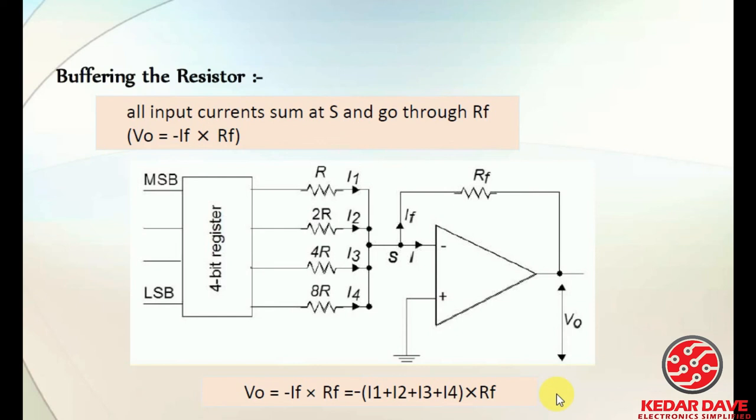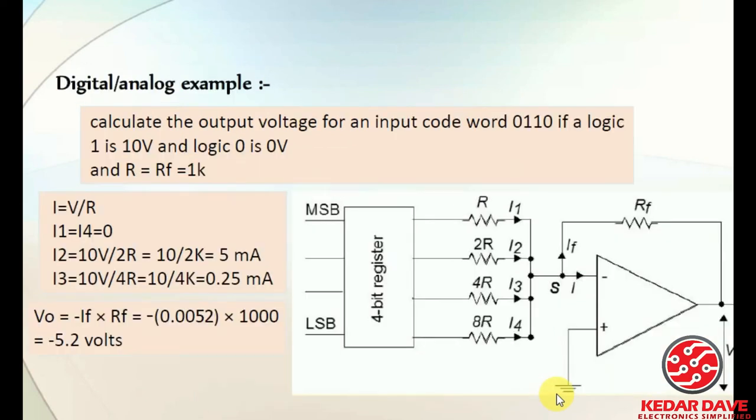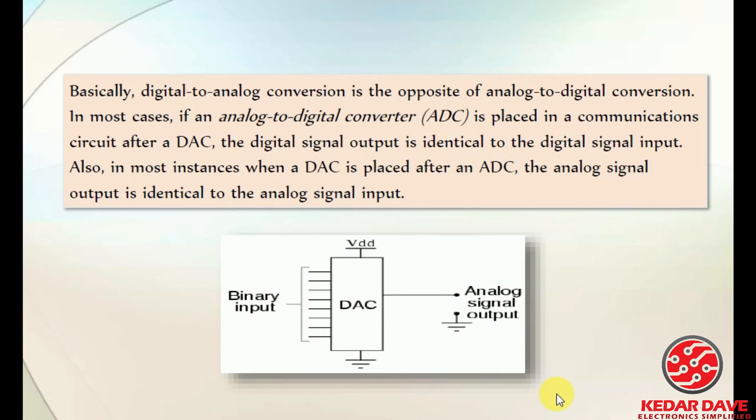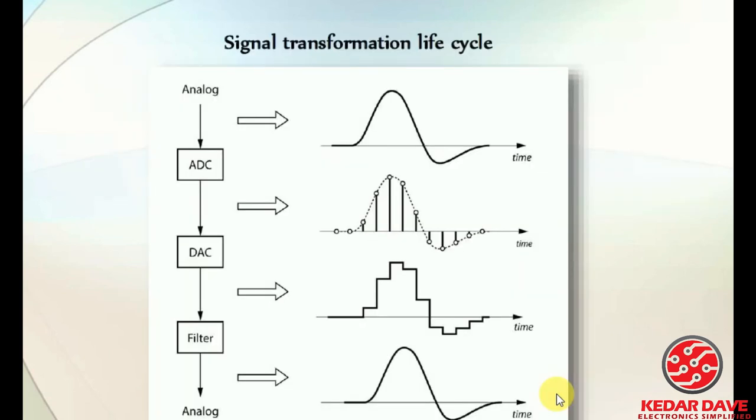Using the values of i1, i2, i3, i4 and the feedback resistance, we can complete the digital to analog conversion using the formula V = IR. Just put in the values and the complete digital to analog conversion can be done.